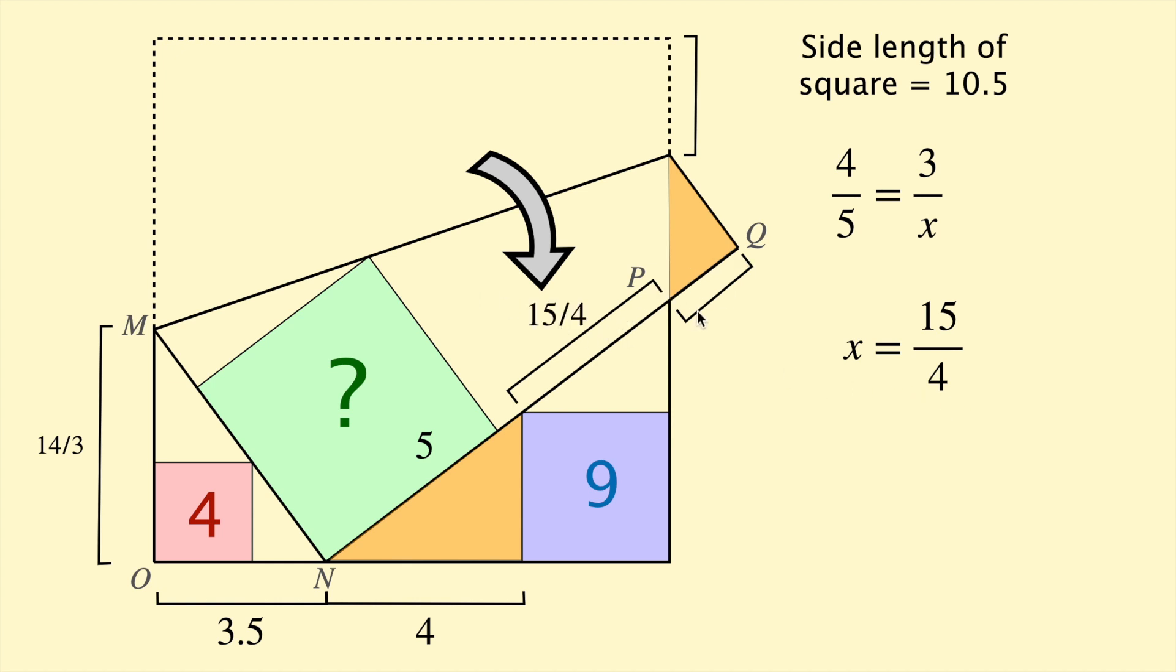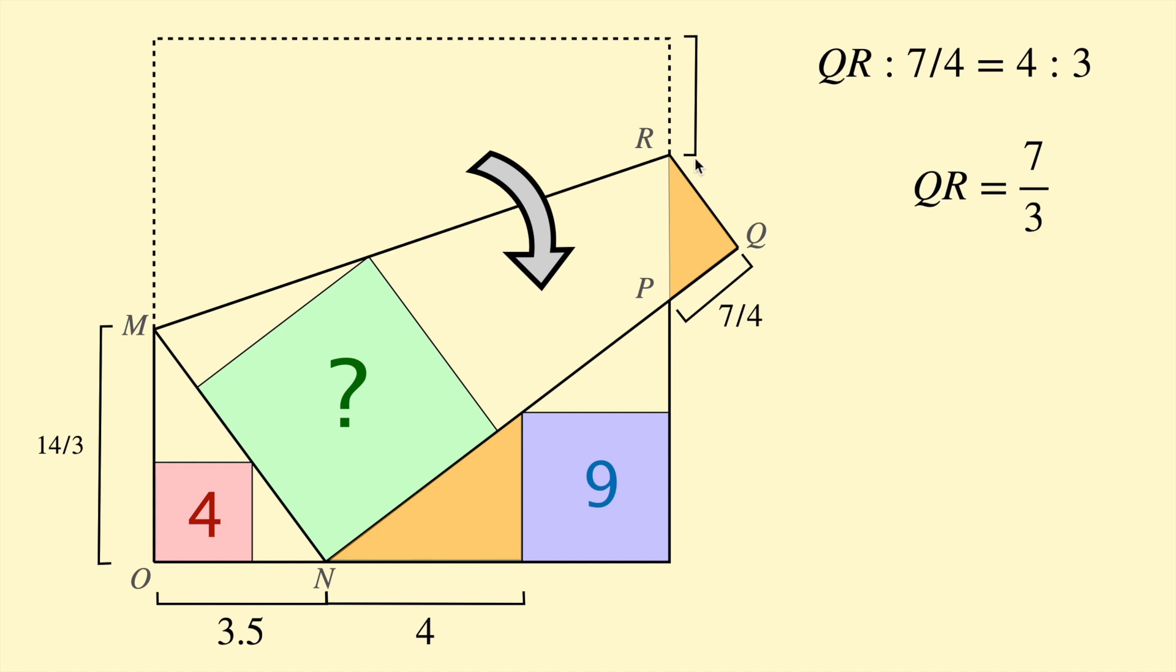This little length PQ is then going to be 10.5 take 5 take 15 on 4. That's the side length of the square take these two lengths. That gives us 7 on 4. So PQ is 7 on 4. Then we can find QR using the fact that these two lengths are in the ratio 3 to 4. So QR to 7 on 4 equals 4 to 3. Then solve this for QR. You get QR equal to 7 on 3. Then notice QR is equal to this length I was looking for. If we folded that piece of paper back, you can clearly see those two lengths are the same. So we have the length we're looking for, which is 7 on 3.